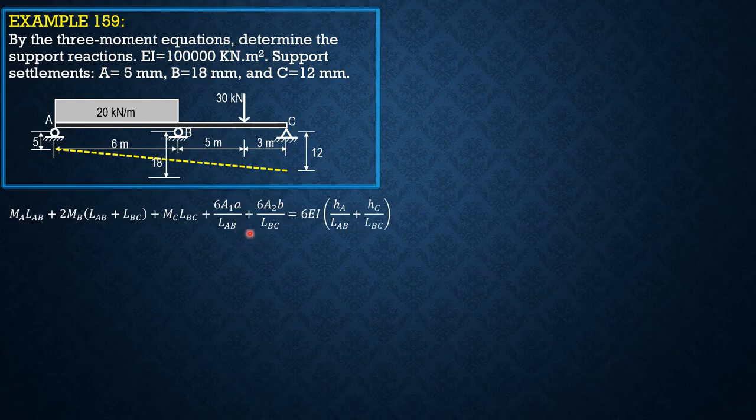By the way, L₁ is LAB and L₂ is LBC. Now moment at A is 0, moment at C is 0 also. It's only B that has moment. So 0 + 2MB(6 + 8) + 0, 6E₁A/L₁ is wL³/4, so 20 × 6³/4.